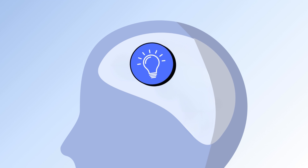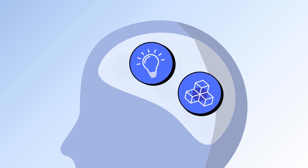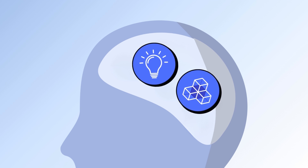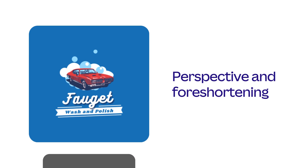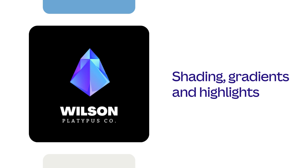It's all about understanding and manipulating visual cues to create a sense of depth and dimension. By cleverly using techniques such as perspective and foreshortening, shading, gradients and highlights, shadows and layering, artists can trick our brain into perceiving a flat image as a three-dimensional object.